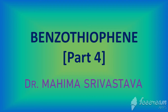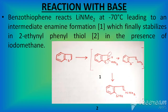So friends, let's see the properties of benzothiophene further. Lithium dimethylamide at minus 70 degrees centigrade leads to the formation of an enamine, which is an intermediate, and finally 2-ethynyl-phenyl-thion is obtained with iodomethane.